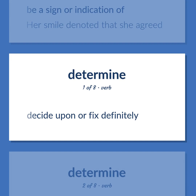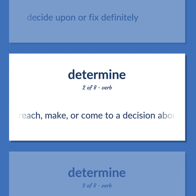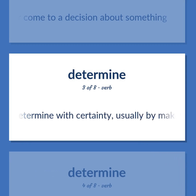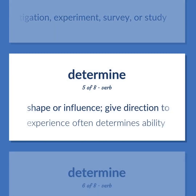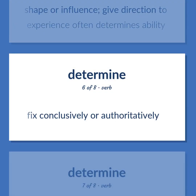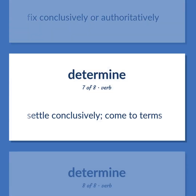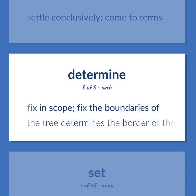Determine: Decide upon or fix definitely. Reach, make, or come to a decision about something. Find out, learn, or determine with certainty, usually by making an inquiry or other effort. Establish after a calculation, investigation, experiment, survey, or study. Shape or influence; give direction to — 'Experience often determines ability.' Fix conclusively or authoritatively. Settle conclusively; come to terms. Fix in scope; fix the boundaries of — 'The tree determines the border of the property.'